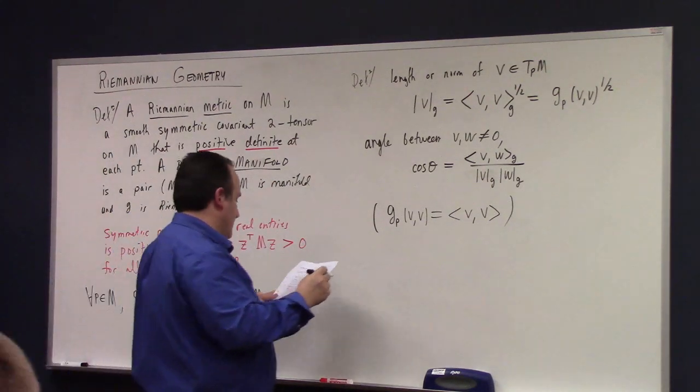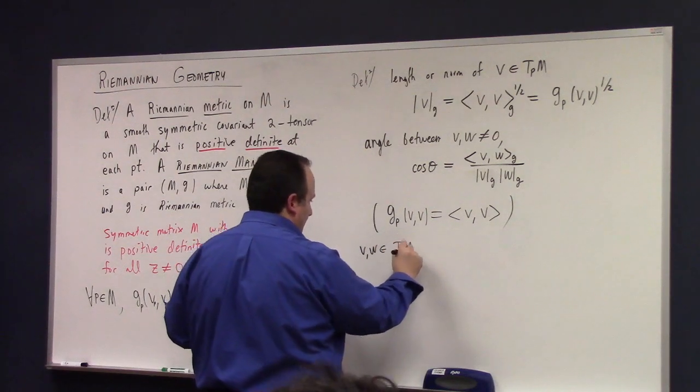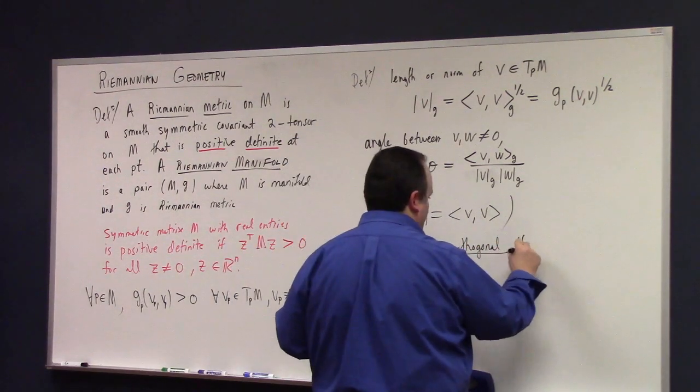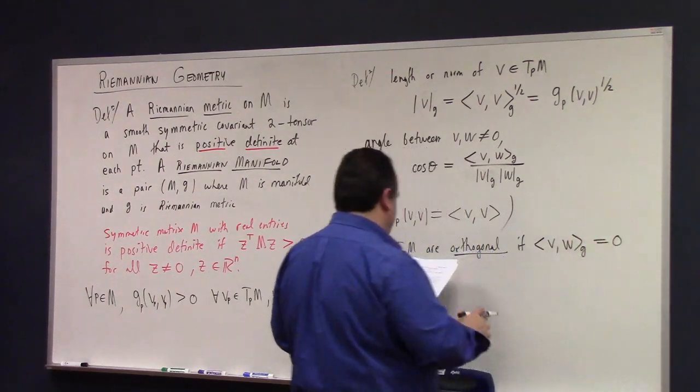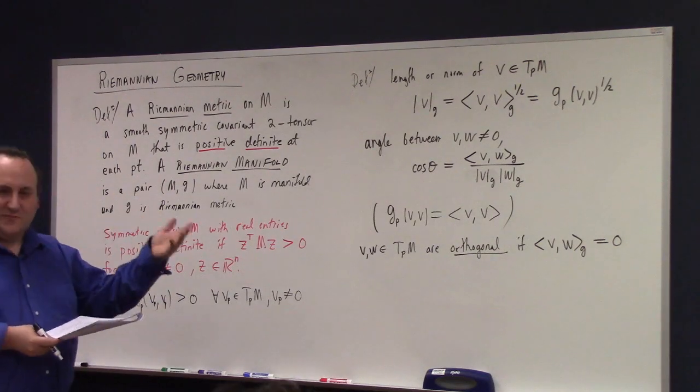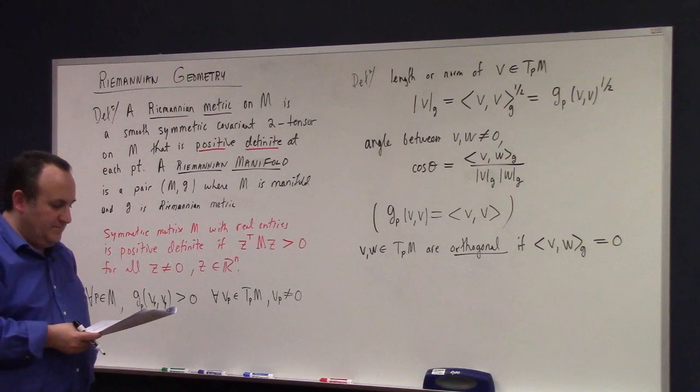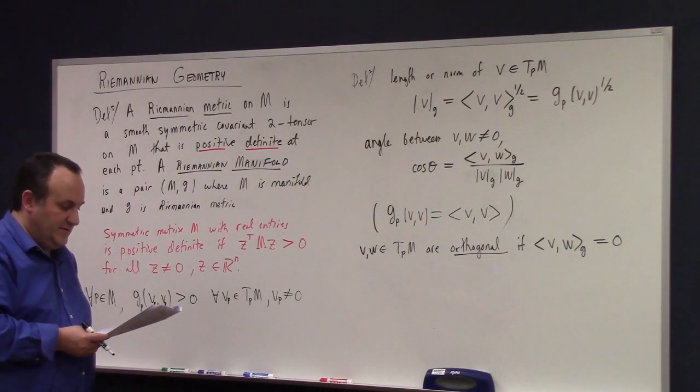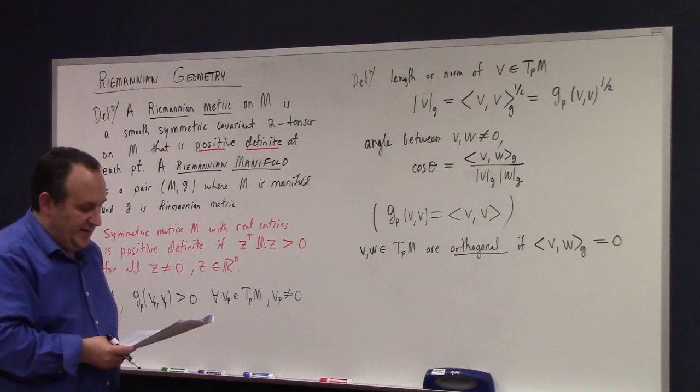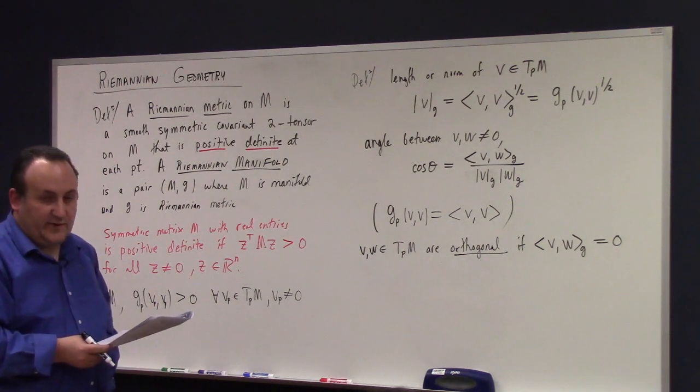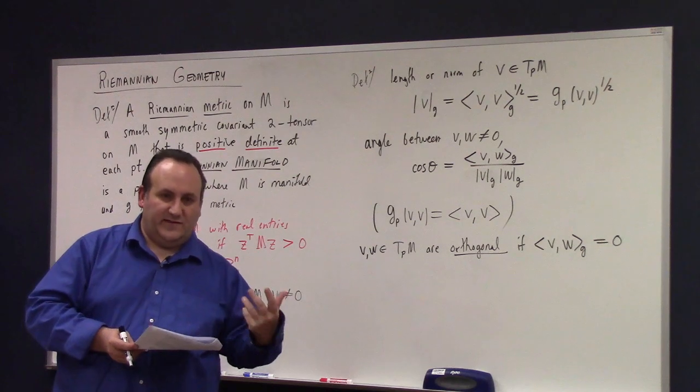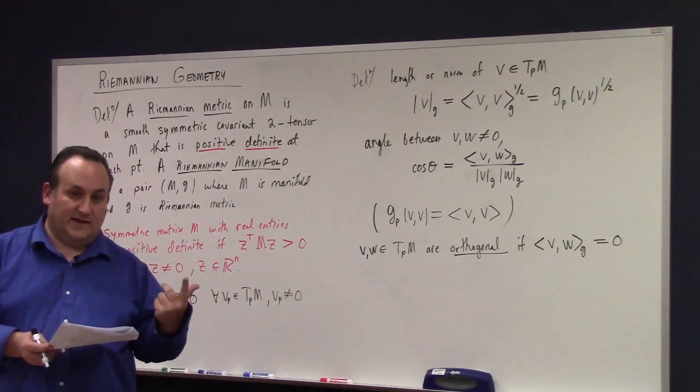In fact, that's another way we could have said this, is that a metric is a covariant two-tensor, which is an inner product on the tangent space at each point. Thank you. To not have said that today would be shameful. So, all right, so that's the angle. What does it mean for vectors to be orthogonal? V, W, in TPM are orthogonal if their inner product, if the inner product of V and W is equal to zero.